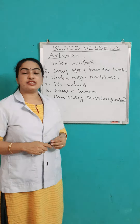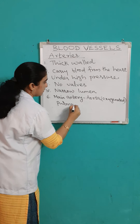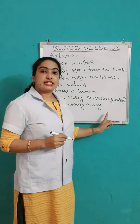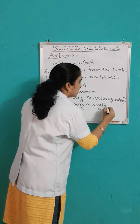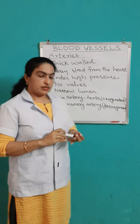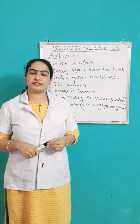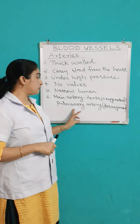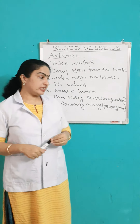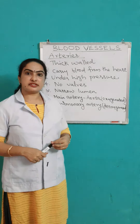There is an exception in case of arteries — that is the pulmonary artery. The pulmonary artery is an exception because it carries deoxygenated blood. Normally arteries carry oxygenated blood from the heart to different parts of the body, but the exception is the pulmonary artery, which carries deoxygenated blood from the heart to the lungs. We can see the pulmonary artery in detail when we study the structure of the heart.